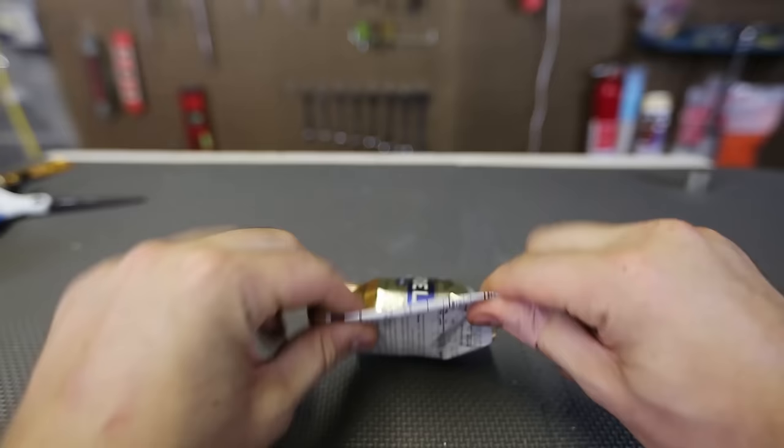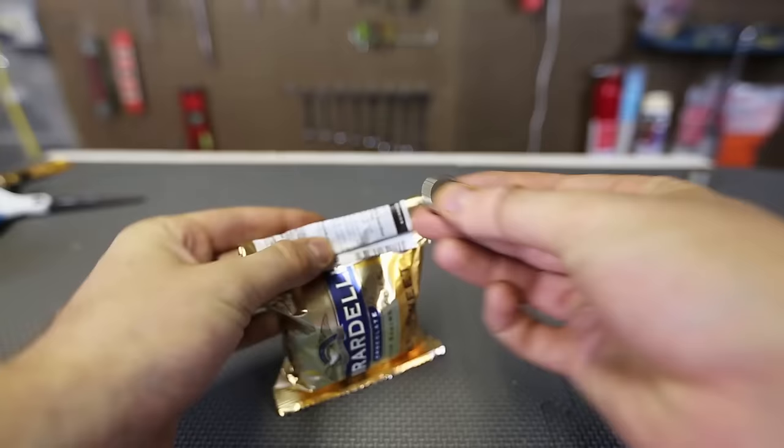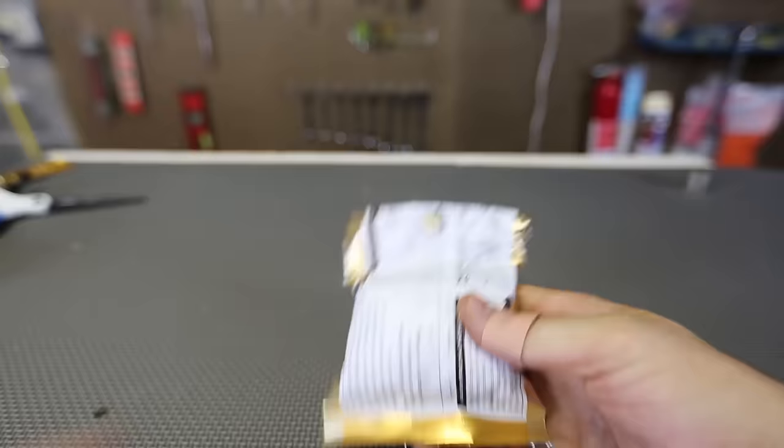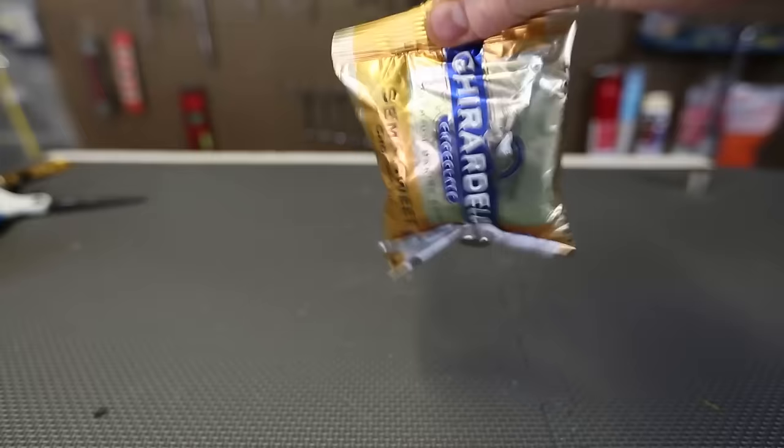Here's a super simple way to seal up your cookies, chips, whatever. Fold it one time or two times, whatever you prefer. And then you will need two small neodymium magnets. One on one side and second one on this side. And that way it will keep it closed. Pretty awesome, huh?